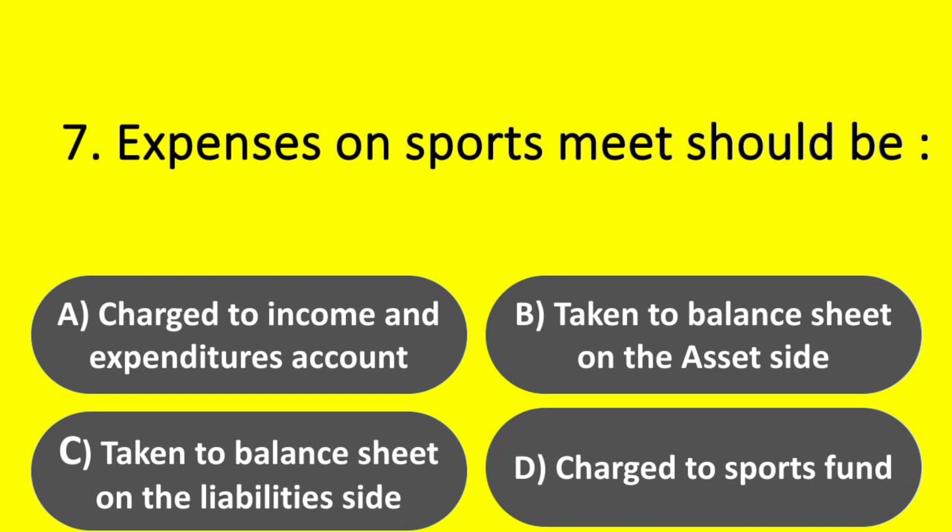Option A – Charged to income and expenditure account. Option B – Taken to balance sheet on the asset side. Option C – Taken to balance sheet on the liability side. Option D – Charged to sports fund. Answer: Option D – Charged to sports fund.